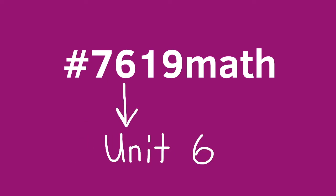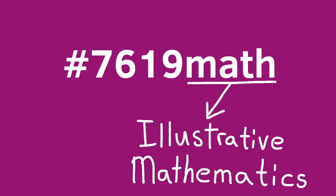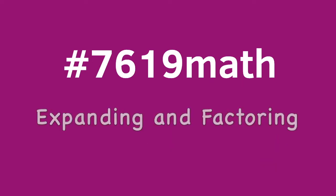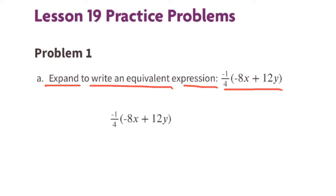7th grade unit 6 lesson 19, Illustrative Mathematics: expanding and factoring. Problem number one, part a: expand to write an equivalent expression. We will use the distributive property to multiply negative one-fourth by the two terms inside the parentheses.